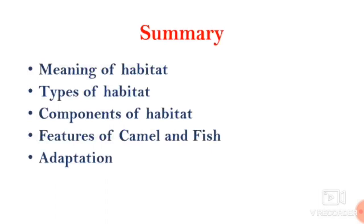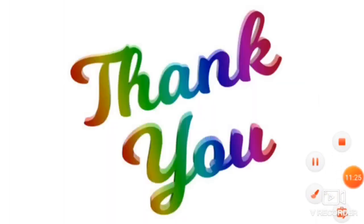In this class you have learnt the meaning of habitat, the types of habitat — terrestrial habitat and aquatic habitat — the components of habitat which are biotic components and abiotic components, the features of camel and fish, and what is meant by adaptation. I hope you have understood. I will send homework and classwork through WhatsApp. Without fail, you have to complete it today and send a photocopy through WhatsApp. Thank you, Jai Shri Gurudev.